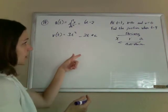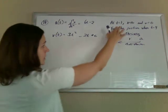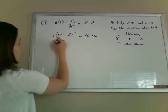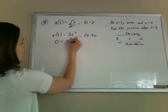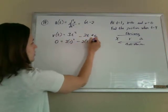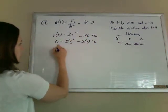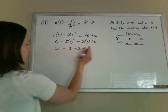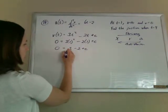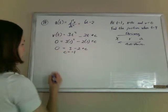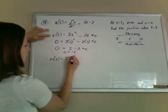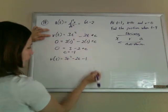And so now we can actually figure out what c is, because they tell me that when t is 1, v is 0. So v is 0 when t is 1. So this is 0 equals 3 minus 2 plus c, so that's 1, so c is negative 1. Therefore, our velocity is 3t squared minus 2t minus 1.